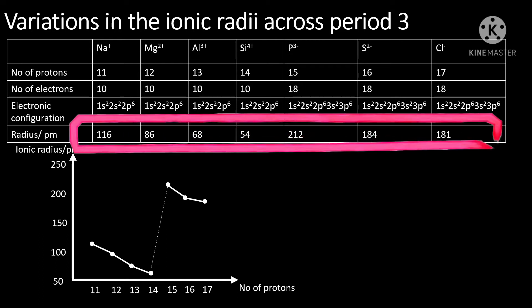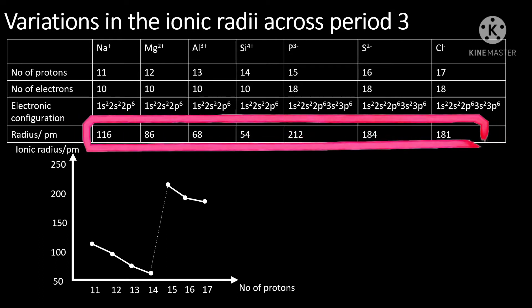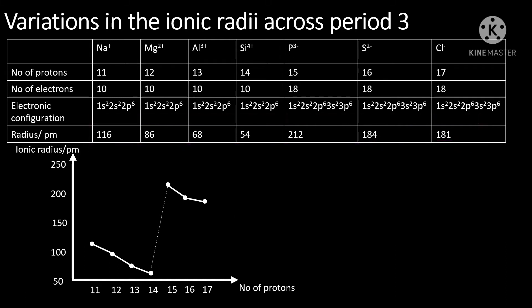If the ionic radii of period 3 elements are plotted on a graph, we will see two downward trend lines — one from sodium ion to silicon ion, and another from phosphide ion to chloride ion. Between these two groups of species, there is a gap. Why?